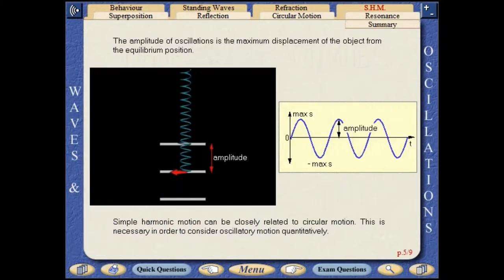The amplitude of oscillations is the maximum displacement of the object from the equilibrium position.